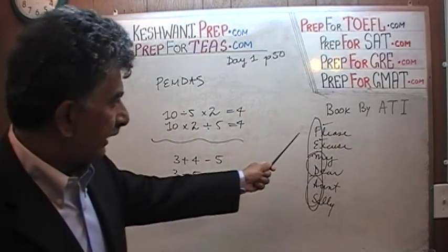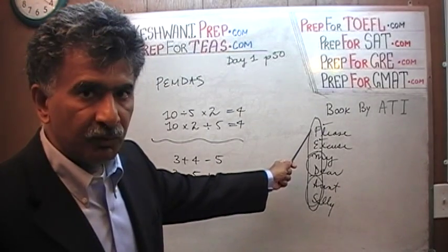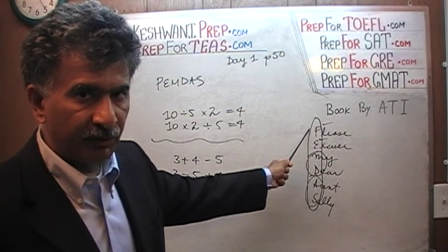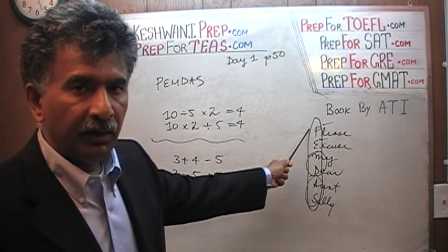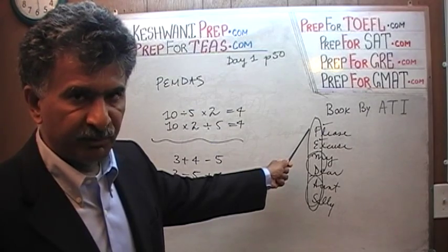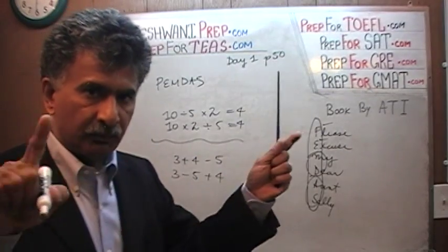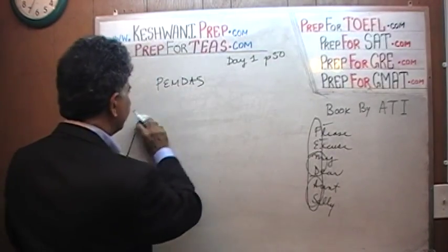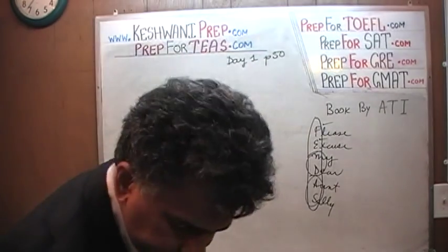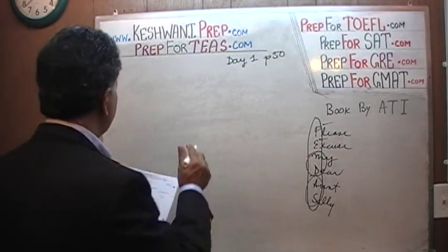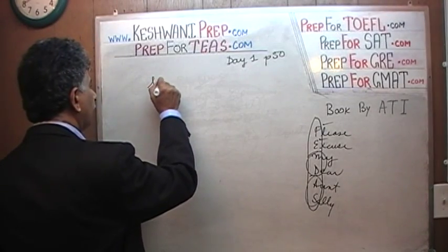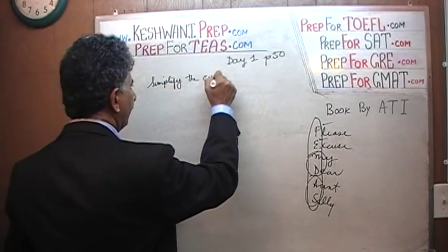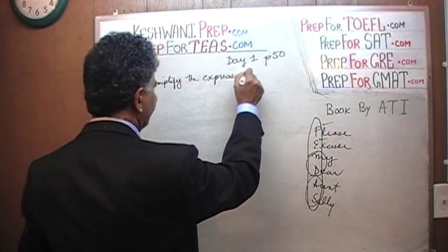The important part to keep in mind is the parenthesis and the exponent. If you see any parenthesis, they must be done first. If you see more than one parenthesis in a given expression, the innermost parenthesis has to be done first. You work your way out from the innermost parenthesis. Let's take a look at the very first one. The very first problem says simplify the expression.